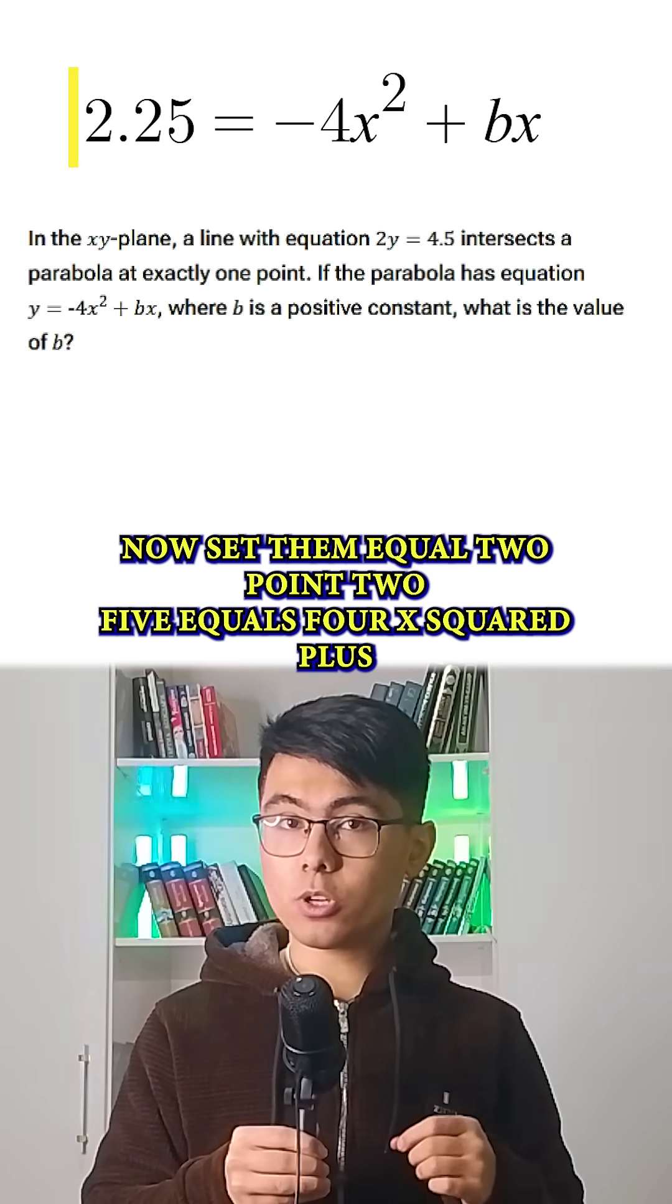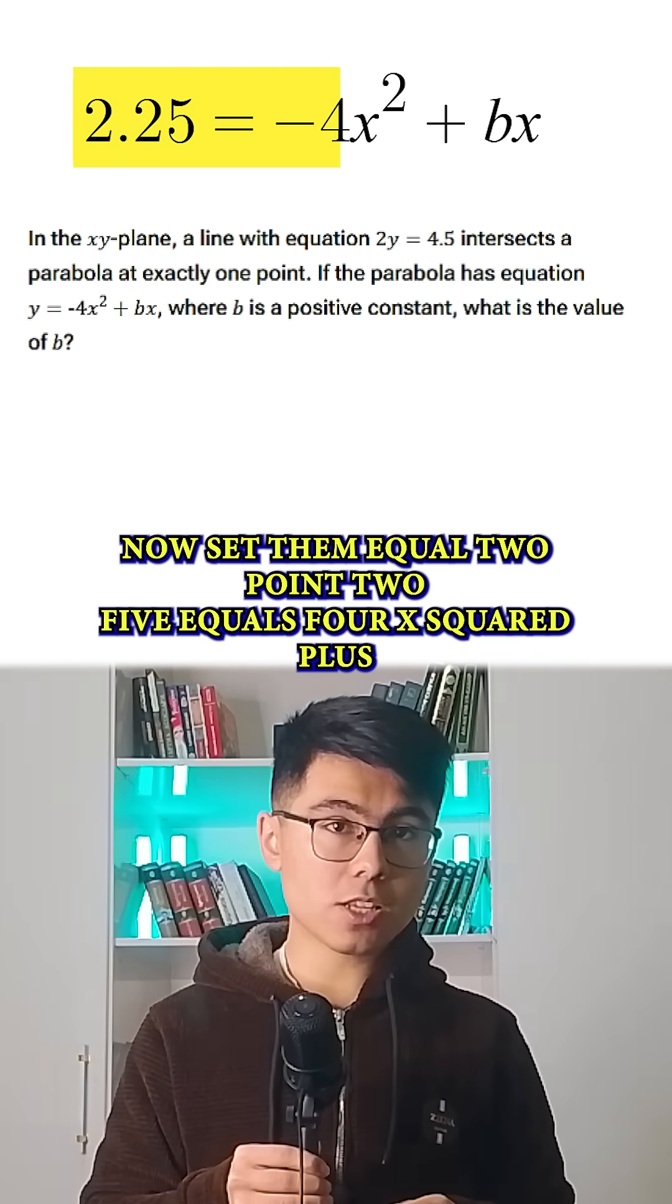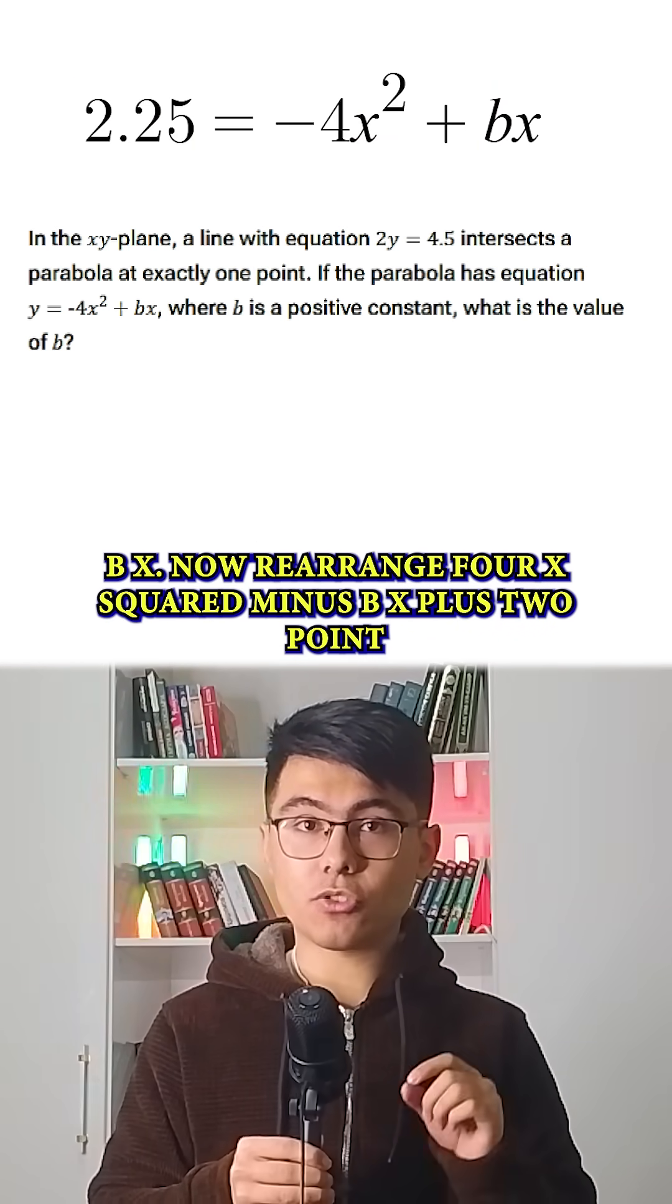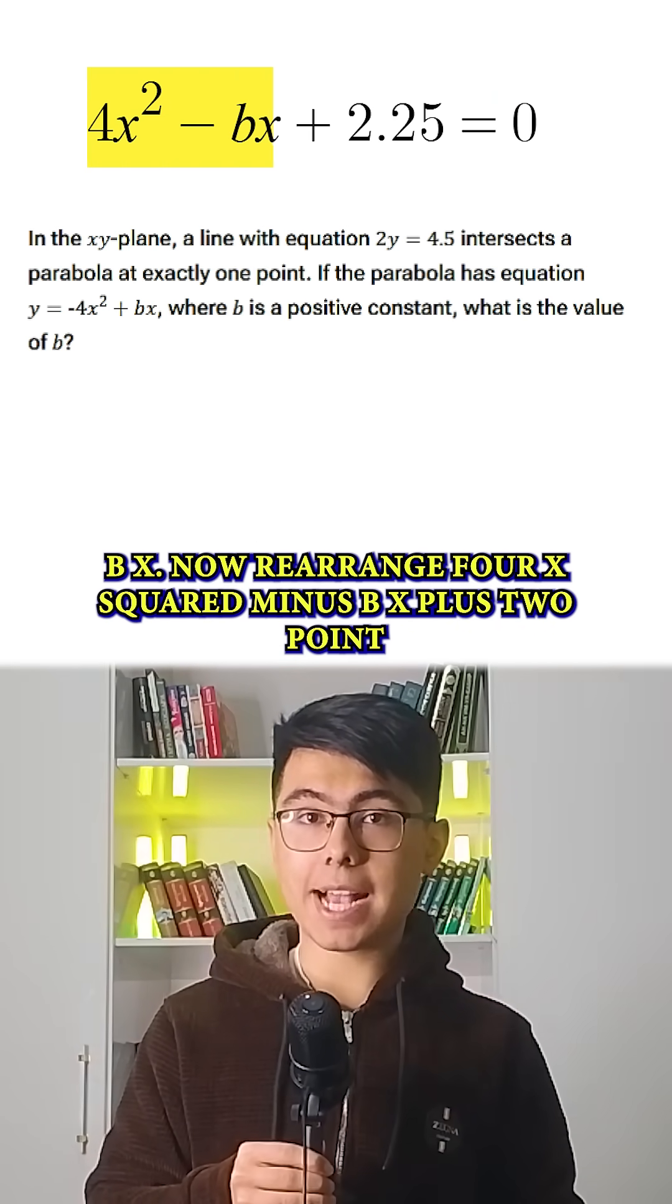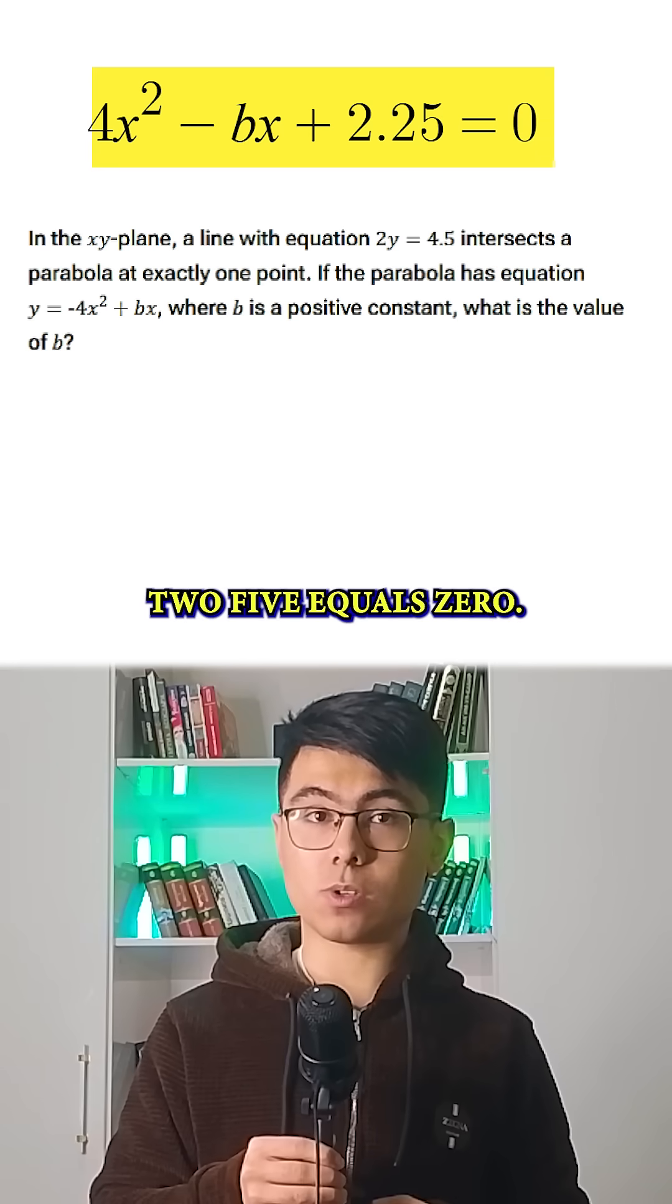Now set them equal: 2.25 = -4x² + bx. Rearrange: 4x² - bx + 2.25 = 0.